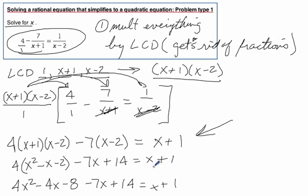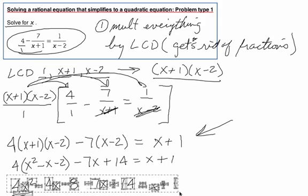Now we've got to gather everything up and set it equal to 0, because this is a quadratic. So we need to gather everything up, set it equal to 0, factor, and then solve.